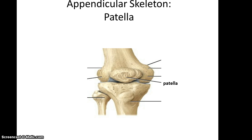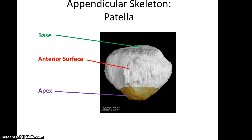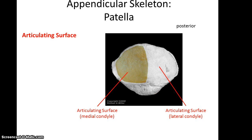The patella is the kneecap. Looking at the interior side, it has a broad base, an interior surface that's rough, and then an apex which is more pointy. Flip it over and you see its articulating surface, which is smooth and relatively flat.